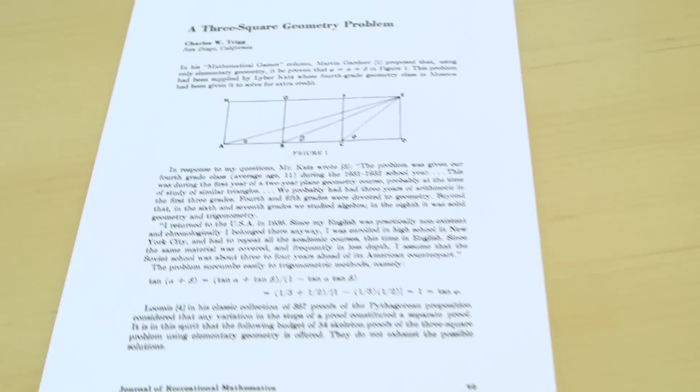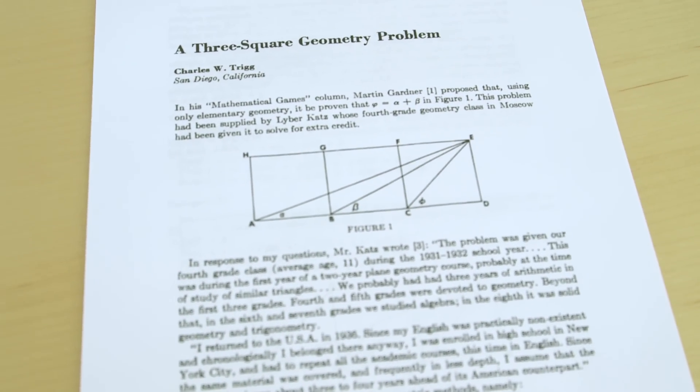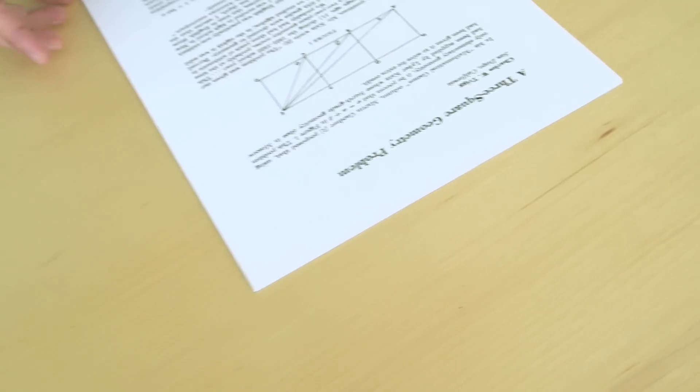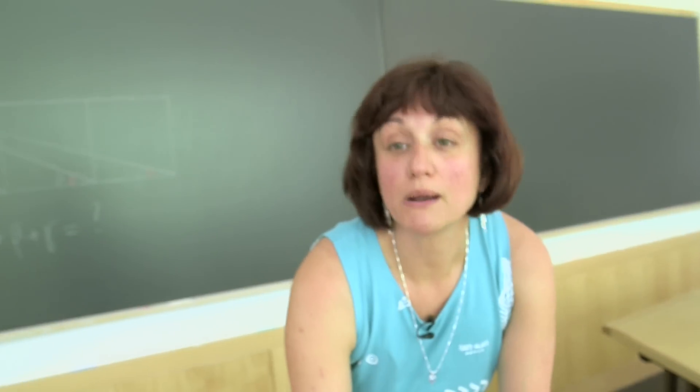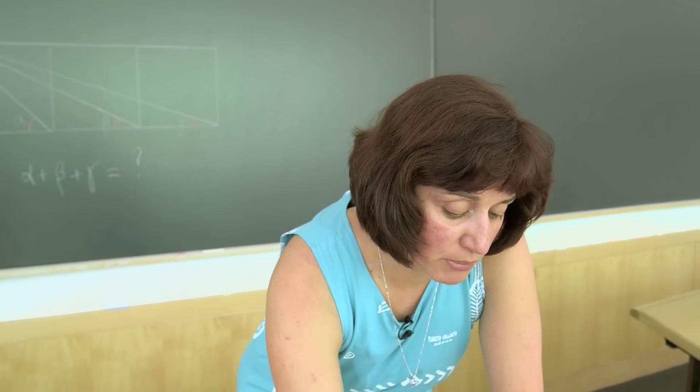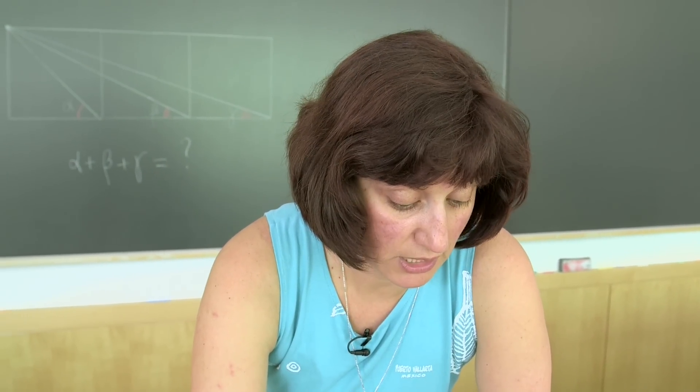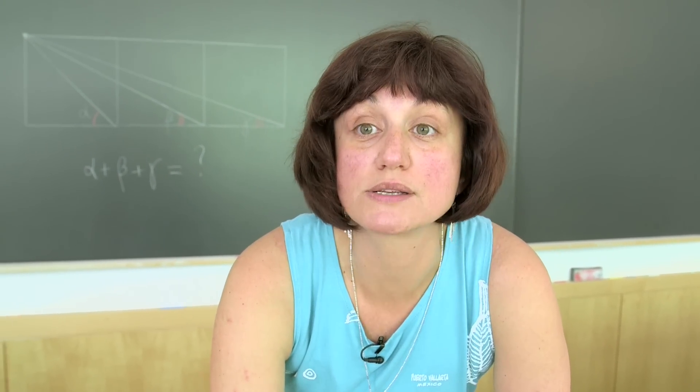So you can see the problem on the front. It's kind of reflected, but the same problem nevertheless. And so he tells us a very interesting story where he learned the problem from. The problem was supplied by Leiber Katz, whose fourth grade geometry class in Moscow had been given it to solve for extra credit.